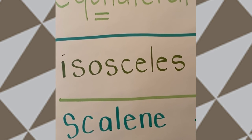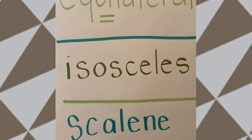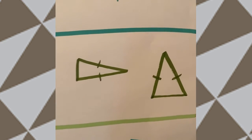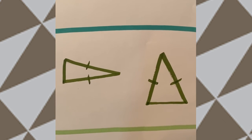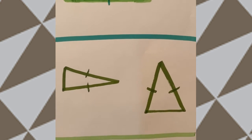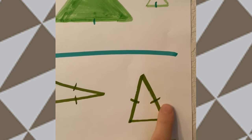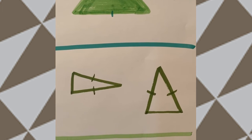This is the word isosceles, and it actually means two equal legs. So here are my isosceles triangles that have two sides that are equal, and you can see like with my dashes here, here are my two sides that are equal on this triangle. Here are my two equal sides on this triangle. They're often kind of long and skinny.